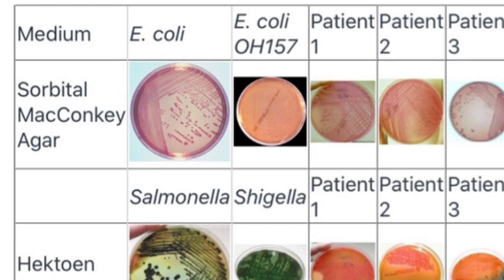We also have sorbitol MacConkey agar — MacConkey agar containing sorbitol instead of lactose — which can be used in the separation of pathogenic E. coli O157. This organism produces colorless colonies on the medium because it does not ferment sorbitol, making the medium useful for screening E. coli O157. When culturing the sample, stool is cultured on selective medium by streaking a loopful of stool specimen.